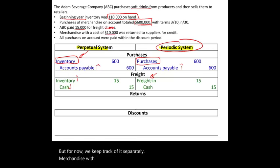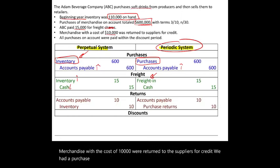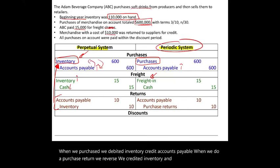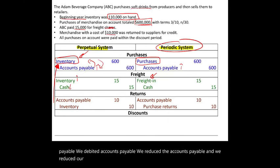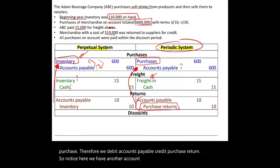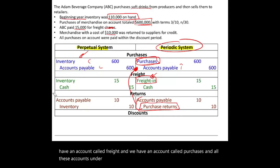Merchandise with a cost of $10,000 was returned to the supplier for credit — a purchase return. The purchase return is the opposite of a purchase. Under perpetual, we credit Inventory and debit Accounts Payable, reducing both. Under periodic, we debit Accounts Payable and credit Purchase Returns. Notice that under periodic we have separate accounts: Freight In, Purchases, Purchase Returns. Under perpetual, all of these roll into Inventory, since inventory is being updated constantly.